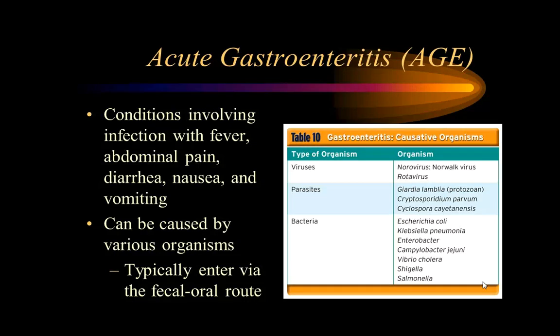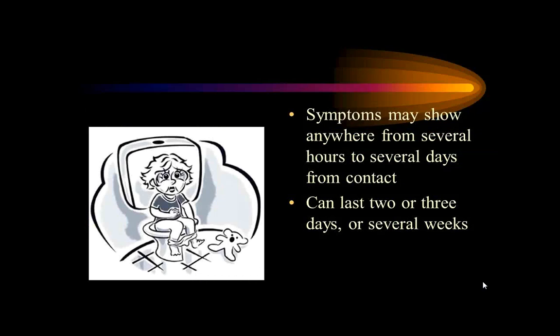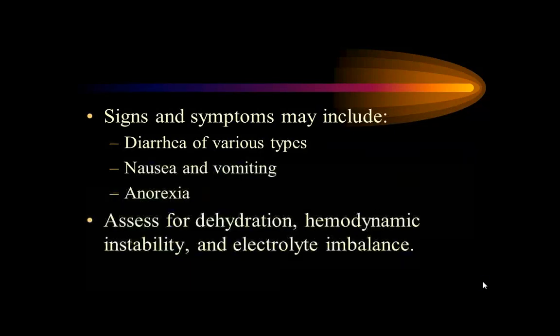Anything causing abdominal pain, diarrhea, nausea, and vomiting is gastroenteritis. Symptoms appear several hours to several days after contact because it takes time for the infection to build in your system — you have to build up enough bacteria or virus to cause problems. Typical presentation is diarrhea, nausea, and vomiting.